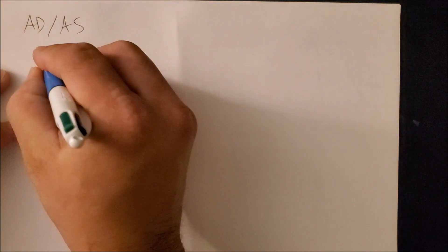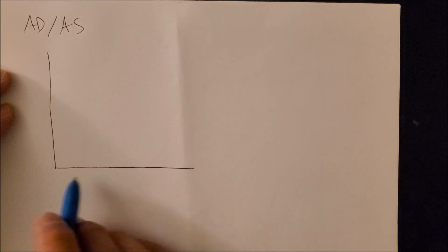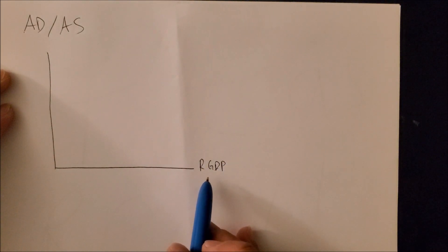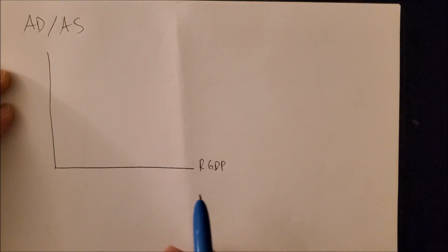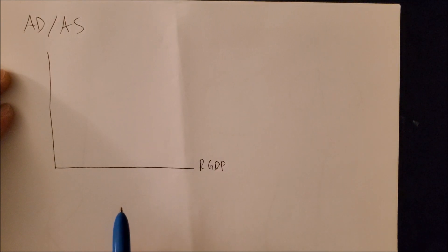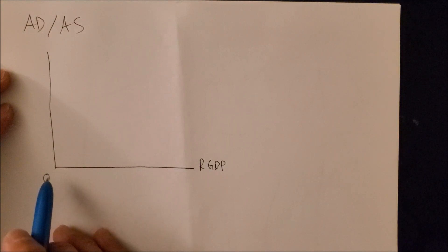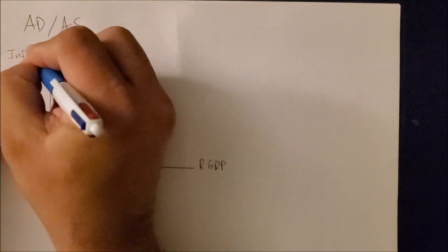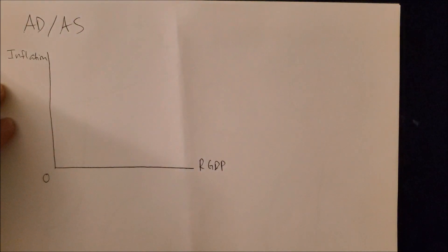To illustrate that, we need to draw our graph. On the x-axis we have real GDP — we talked about this before in class where we focused on a base year and look at the quantity of goods consumed and produced, giving us a better measure of growth from one year to the next. On the y-axis we have price level, which we can also call inflation.